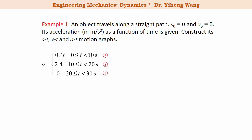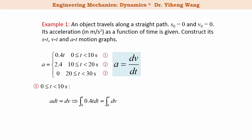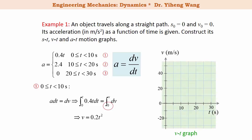Next, let's work on the v-t graph. We use the kinematic equation a equals dv/dt, so a dt equals dv. For the first time period, we substitute a equals 0.4t and integrate both sides. The lower integration limit is 0 because the initial velocity is 0. We get velocity equals 0.2 times t squared. On the v-t graph, we sketch this equation for t from 0 to 10 seconds, and calculate that at the end of this period the velocity has increased to 20 meters per second.